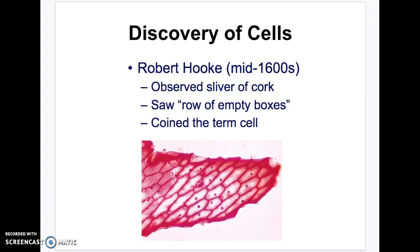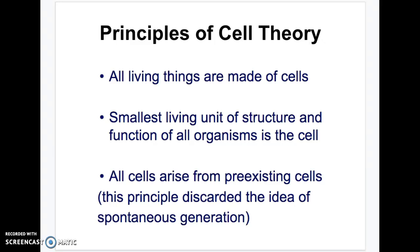There are three parts of the cell theory that scientists, including Robert Hooke and others, developed as they continued to make discoveries. There are three basic rules of cells and how they should be classified. The first: all living things are made of cells.